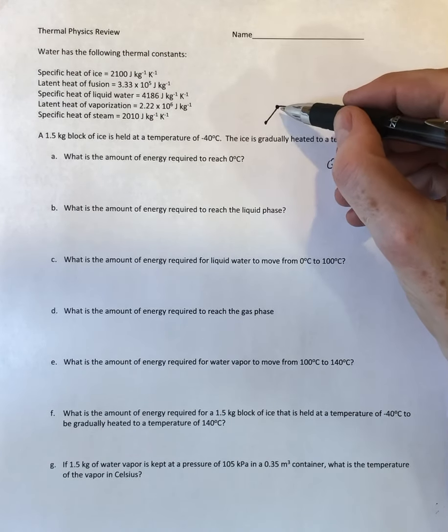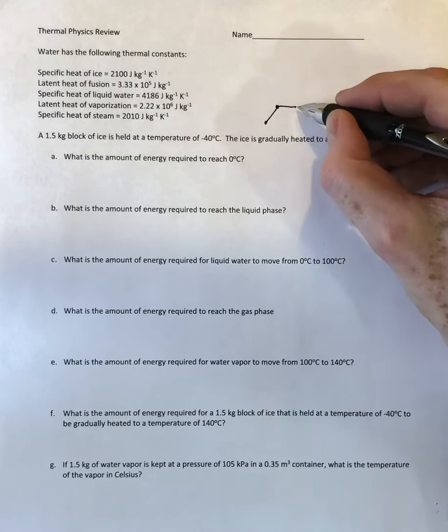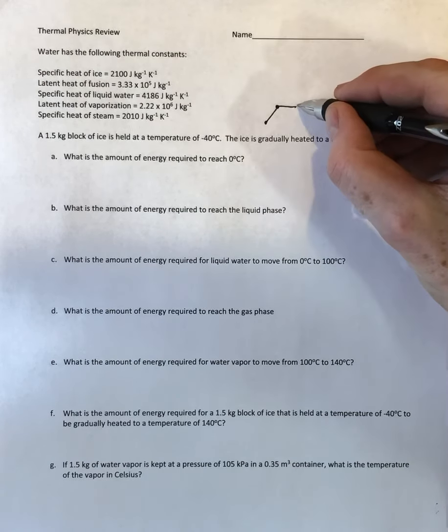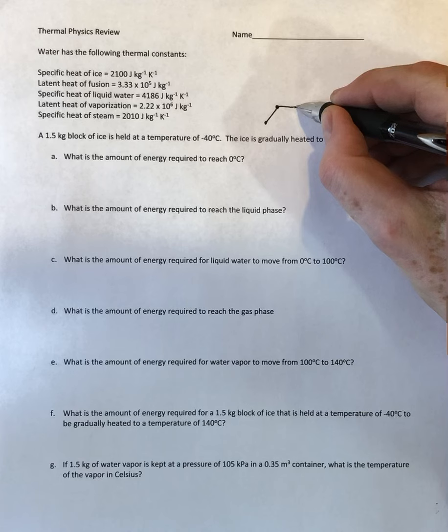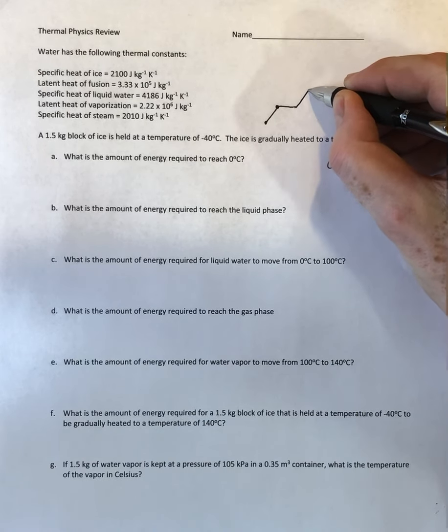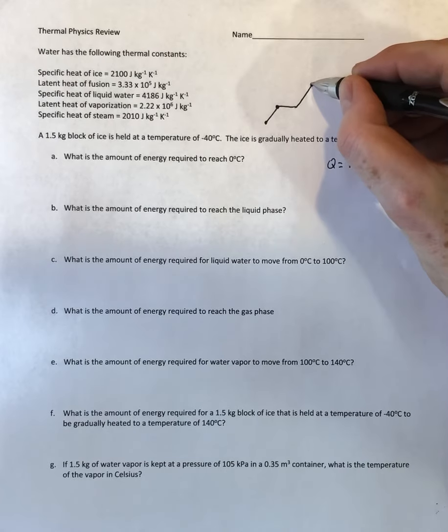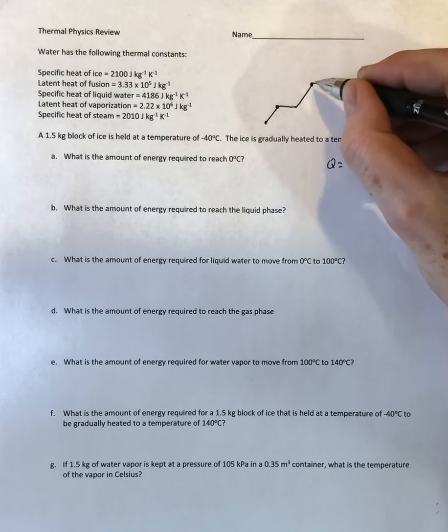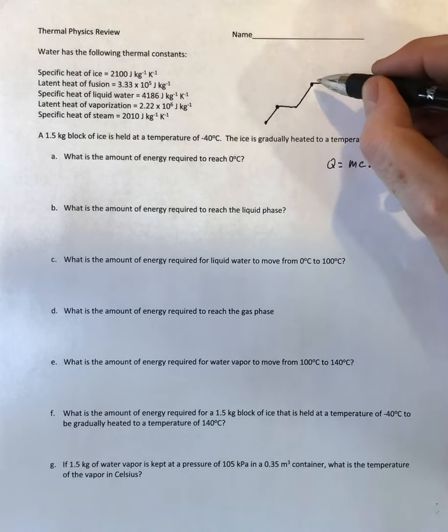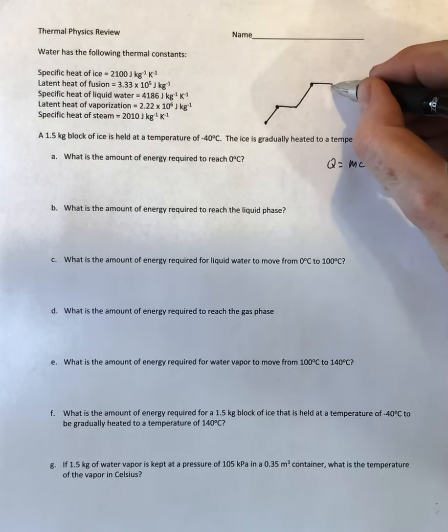Depending on how much latent heat it holds, eventually the whole solid will turn into a liquid, assuming the pressure is set. Then the liquid will heat up until it reaches a point where it starts to boil or vaporize. It takes a while for it to vaporize because it takes quite a bit of energy to turn a substance from a liquid into a gas.